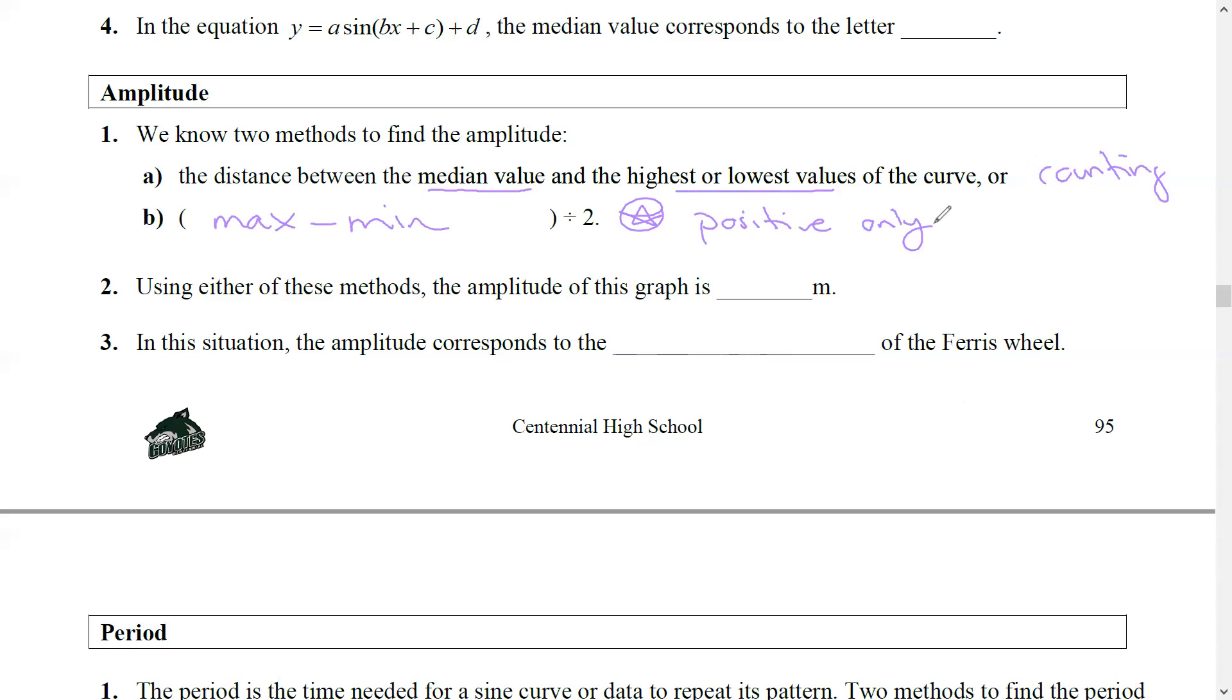Using either of these methods, we find that the amplitude is three, so that would be seven minus one divided by two is three if that's what you wanted to do. Well, what does that relate to? It's the radius of the wheel, also known as the a value.